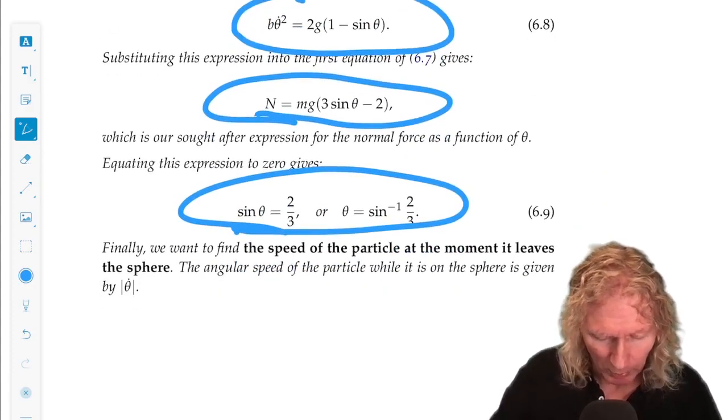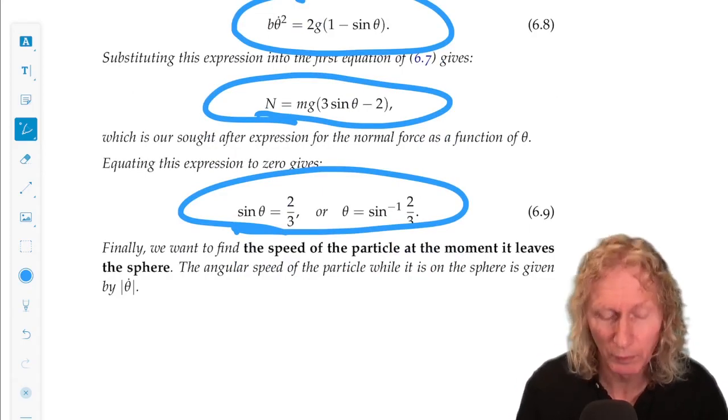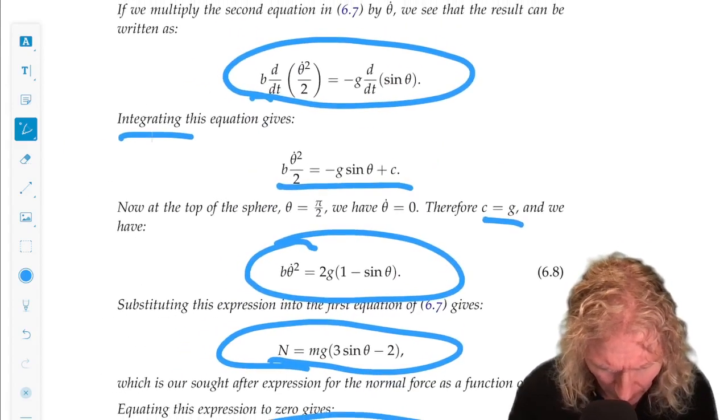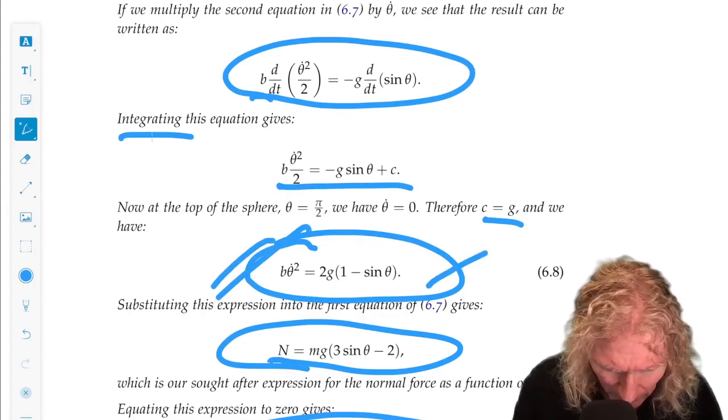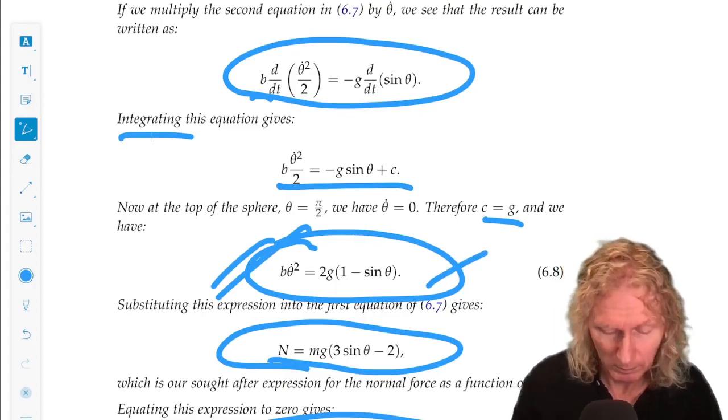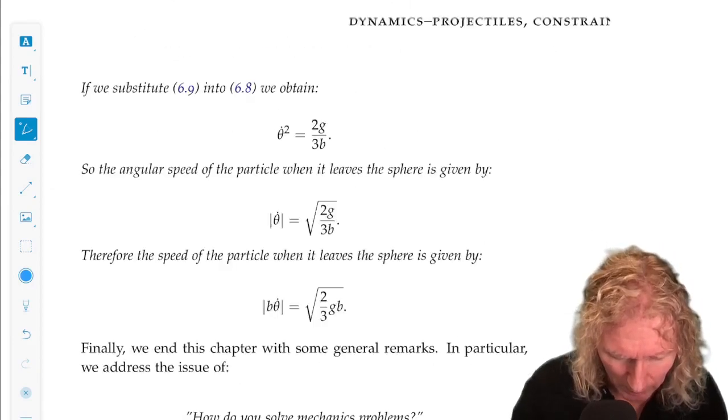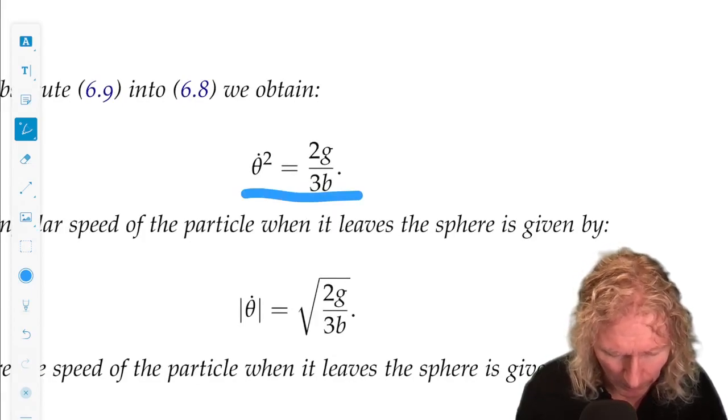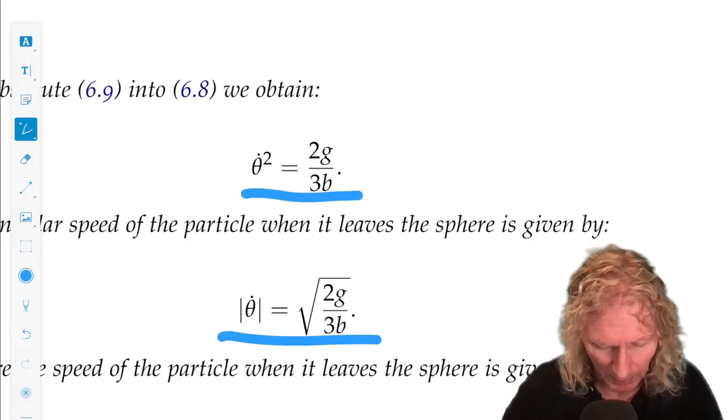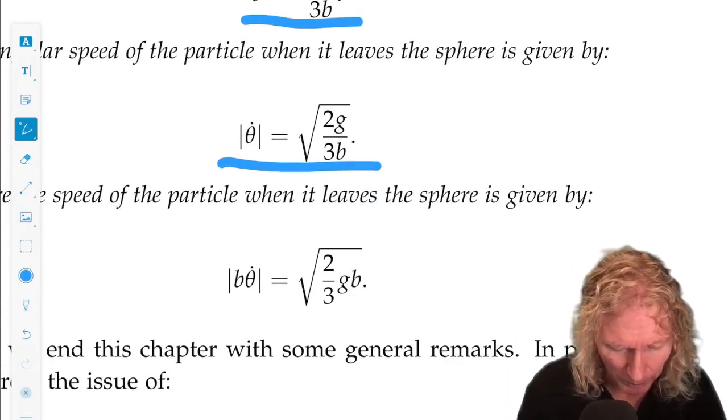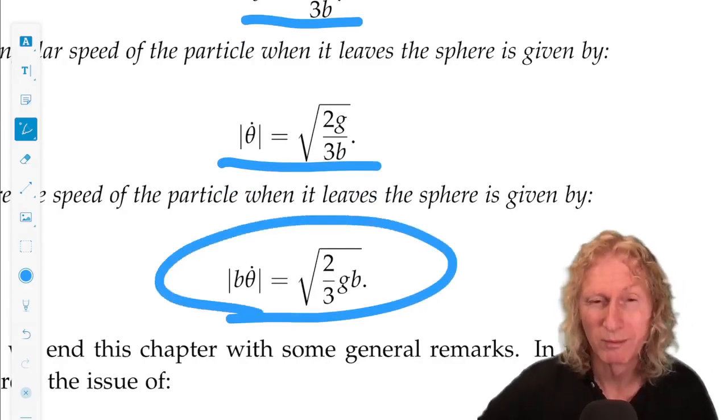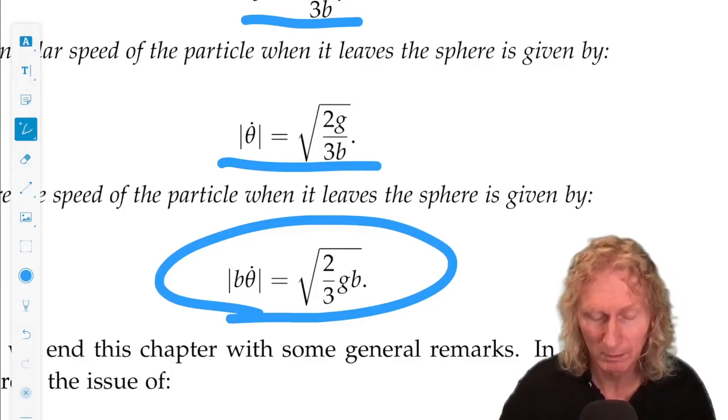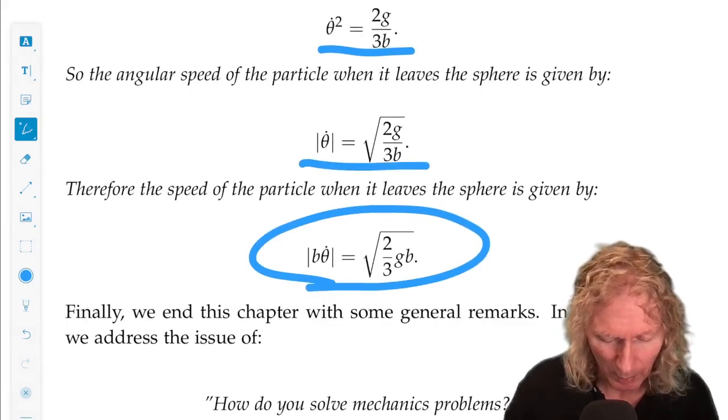Now we want to find the speed of the particle at the moment it leaves the sphere. So we know the angle that it leaves the sphere. If we know the angle, we can go back and put it in this expression, and that will give us theta dot squared at the angle that it leaves the sphere. And that's the angular velocity. If we want the actual velocity, we multiply it by the radius, and we get this expression.